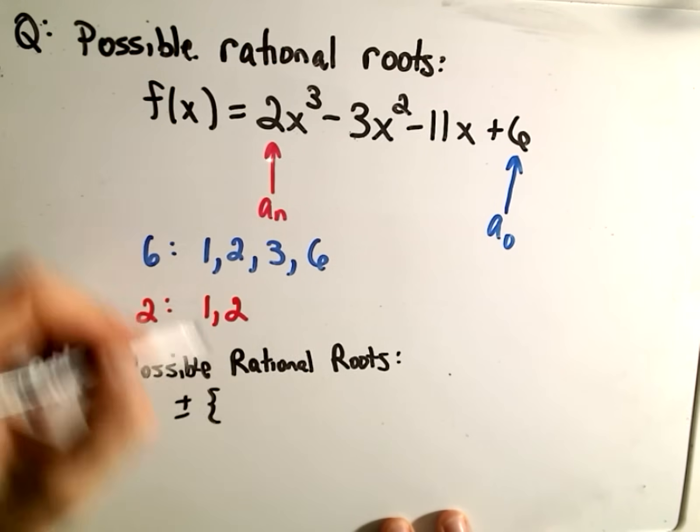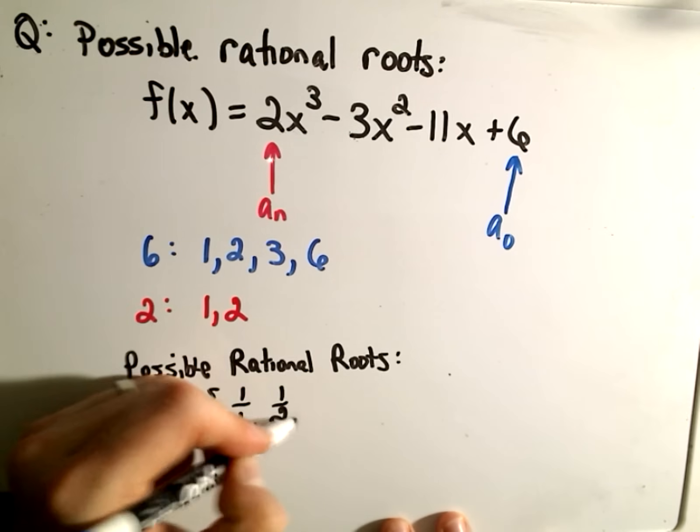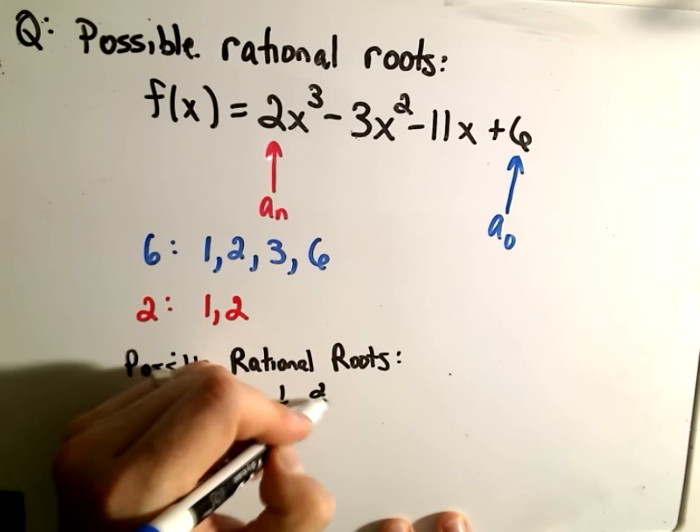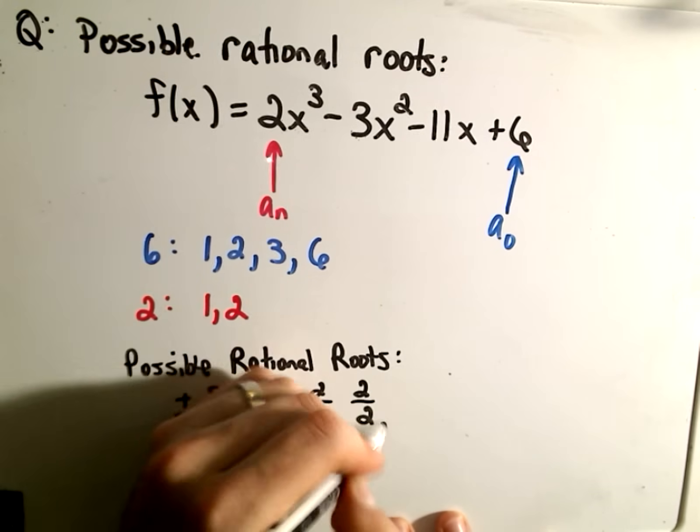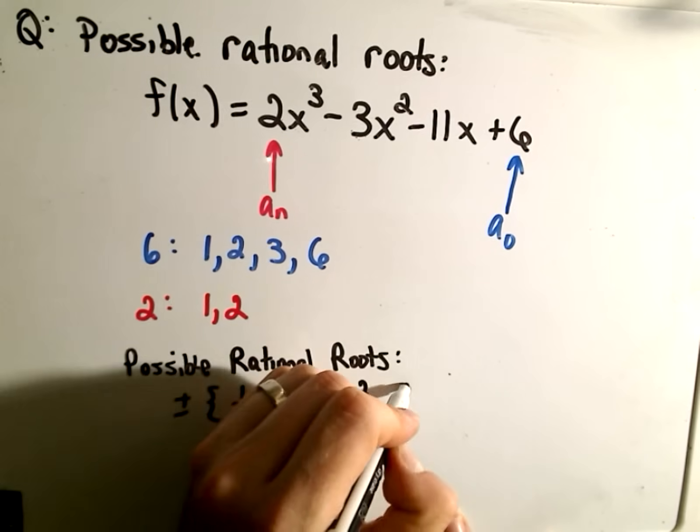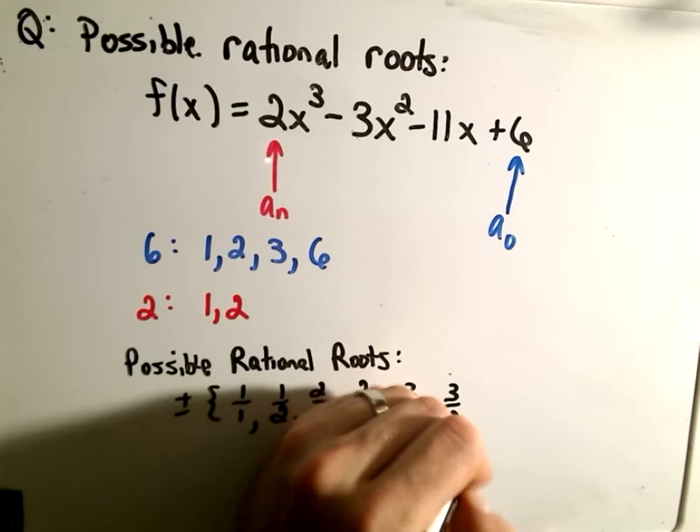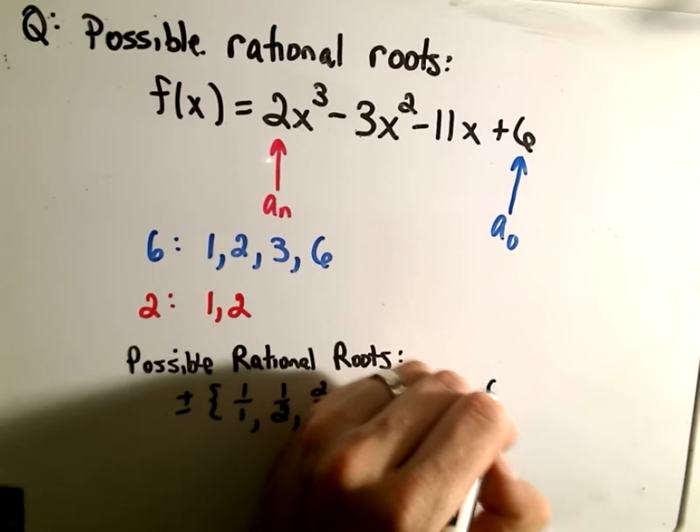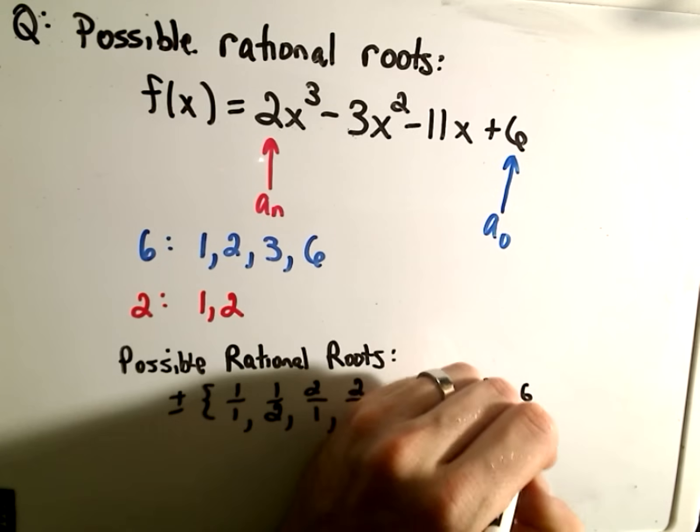You would get positive-negative 1/1, positive-negative 1/2 would be a candidate, positive-negative 2/1, positive-negative 2/2, positive-negative 3/1, positive-negative 3/2, positive-negative 6/1, positive-negative 6/2.